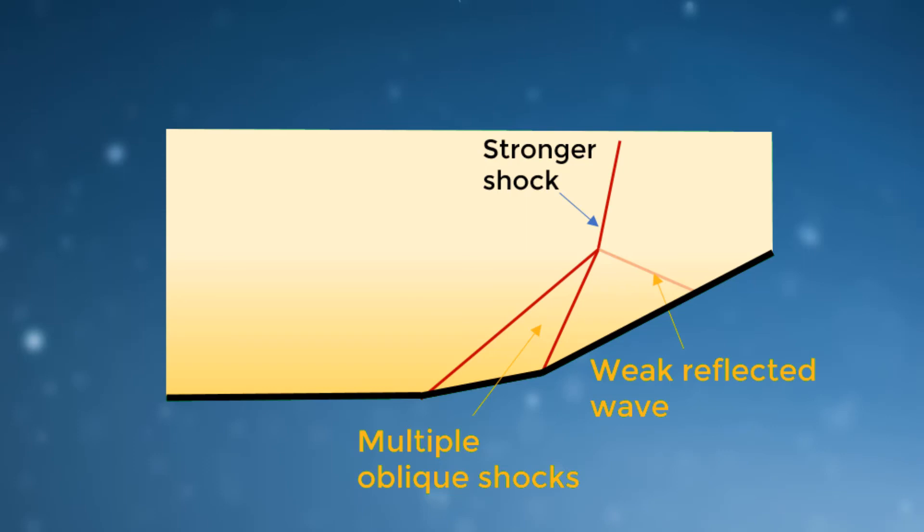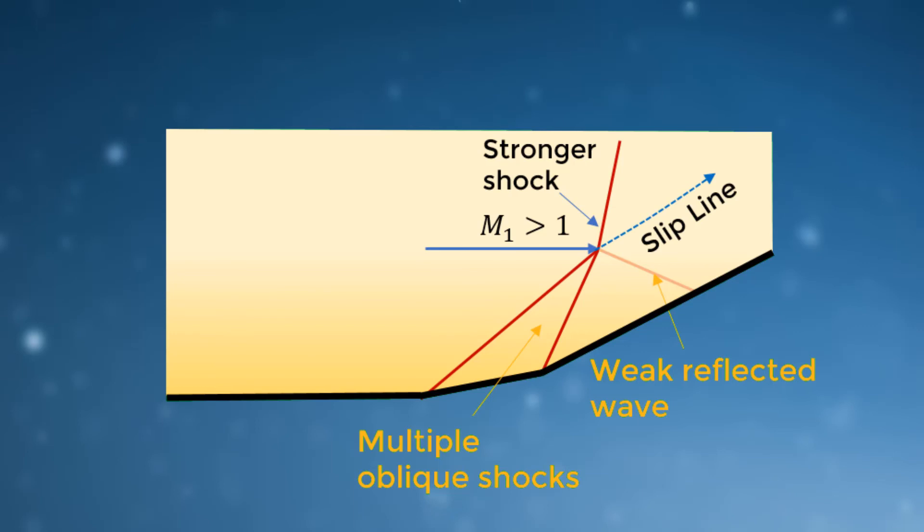The upstream condition of the flow will govern the point of intersection and the strength of the shocks. At the intersection point, a slip line will form along with a weak reflective wave.